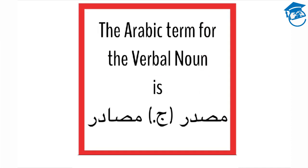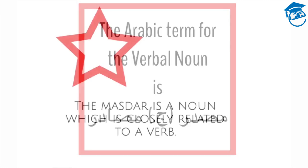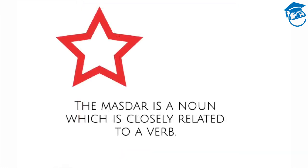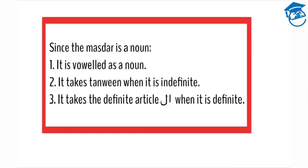The Arabic term for the verbal noun is masdar. The plural of masdar is masadir. So what is a masdar? The masdar is a noun which is closely related to a verb. Since the masdar is a noun, number one, it is vowelled as a noun.